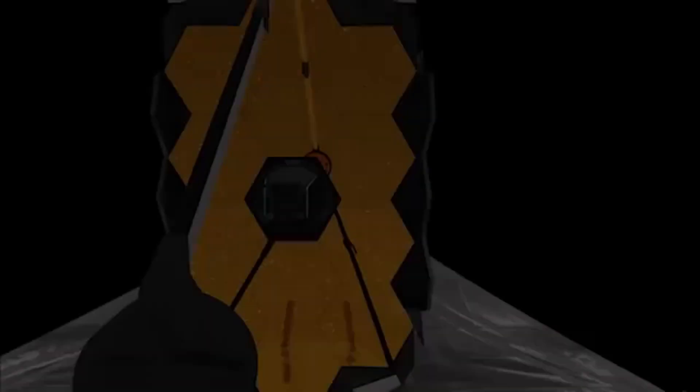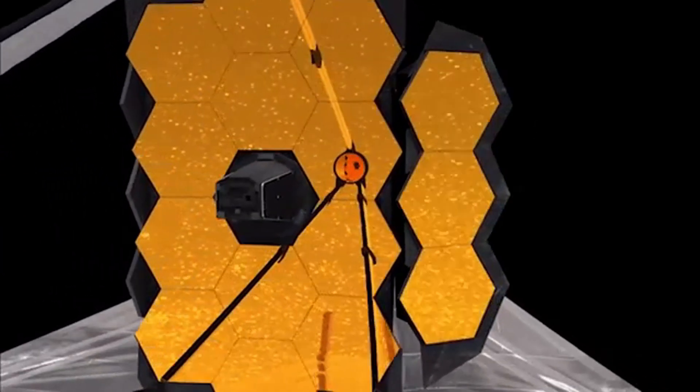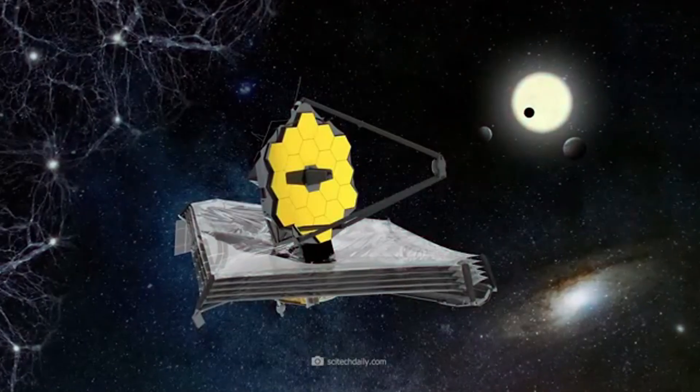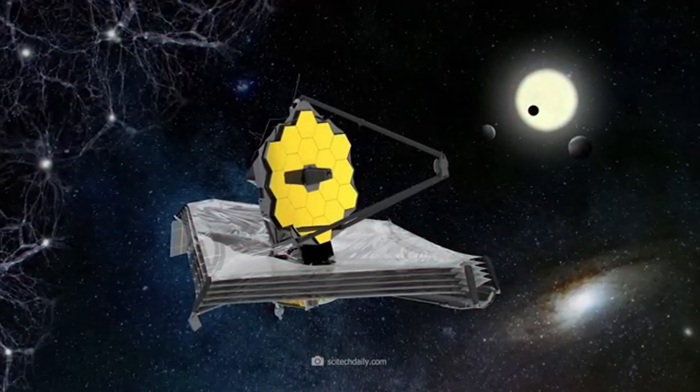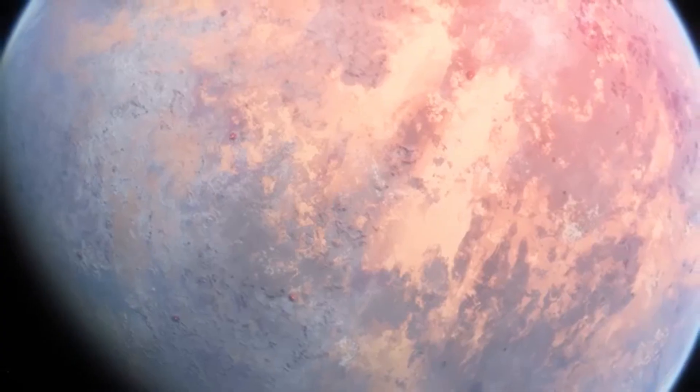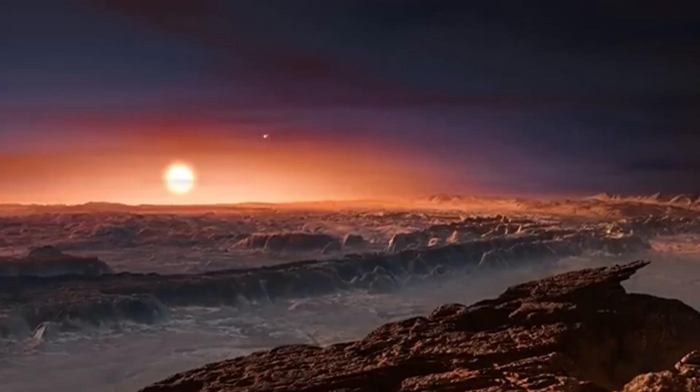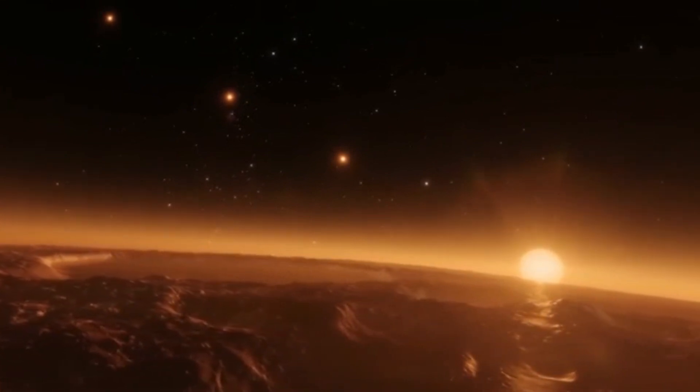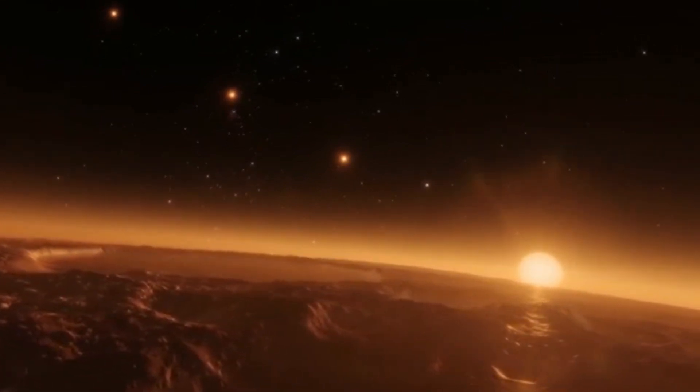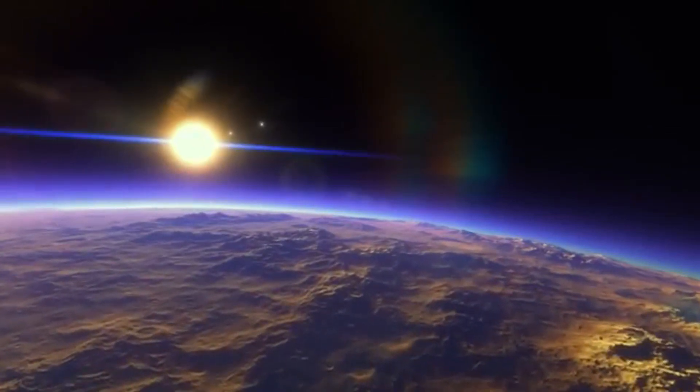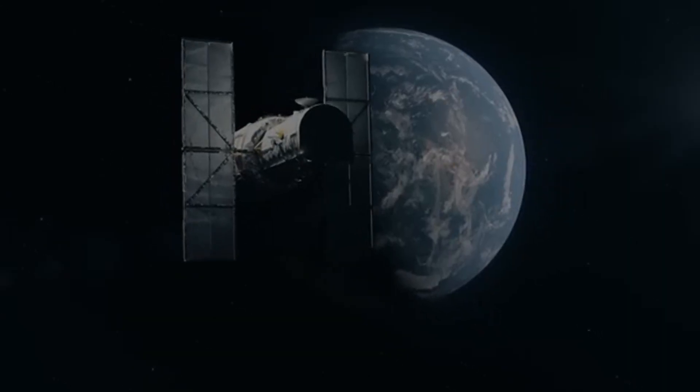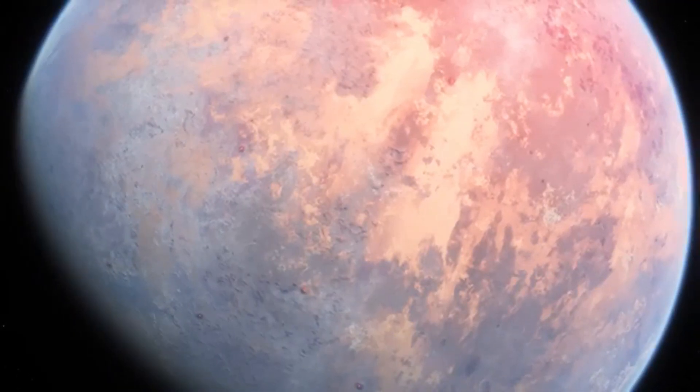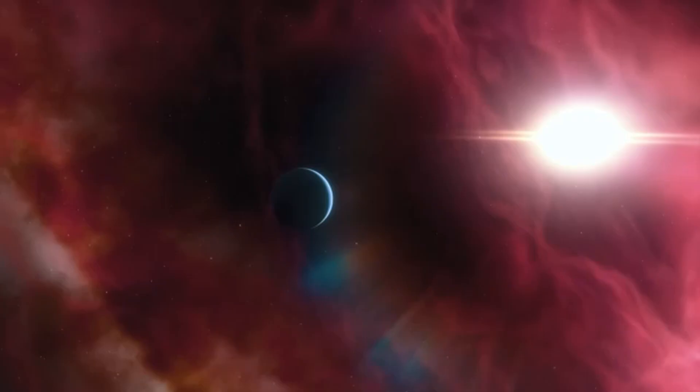This significant finding propels the exploration of exoplanets to new heights, spurring further investigations into Proxima b's atmospheric composition, surface features, and potential biosignatures. Understanding the intricacies of this neighboring exoplanet holds the promise of unveiling insights into the broader questions of habitability and the prevalence of life beyond our solar system. The remarkable aspect of this discovery lies in the fact that Proxima b occupies the habitable zone of its star, sparking tremendous enthusiasm within the scientific community. There is a possibility that this rocky planet may house conditions suitable for liquid water, an essential ingredient for the emergence and sustenance of life as we know it.